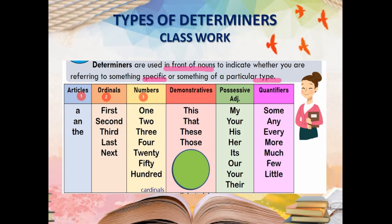Quantifiers: sometimes you are unable to identify the quantity exactly. For that we use words like 'some' — 'some students are playing in the garden' — 'any,' 'everyone,' 'more,' 'much,' 'few,' 'little.' These are used for countable and uncountable nouns. One thing you have to keep in mind: determiners always go in front of nouns. That is the main important point.